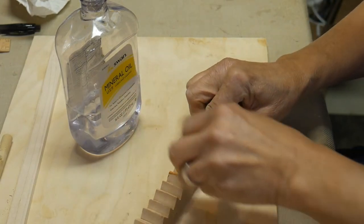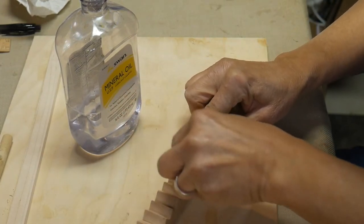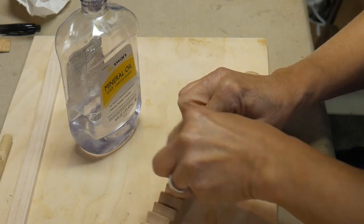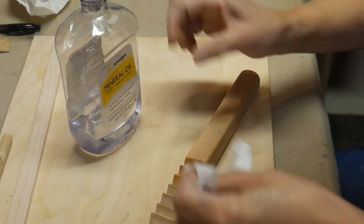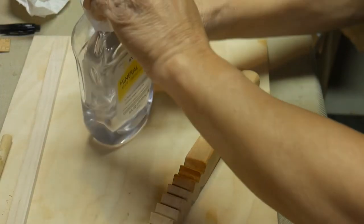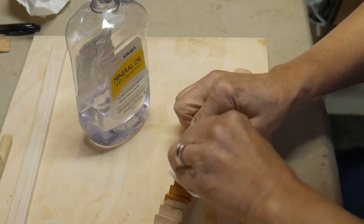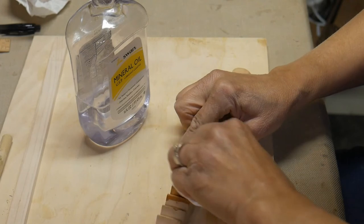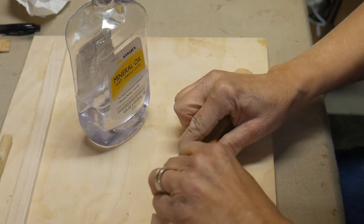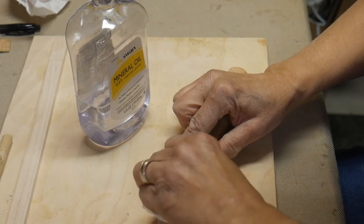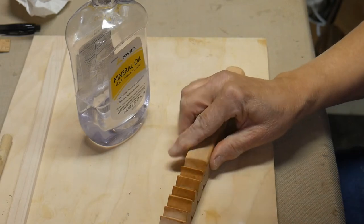If children are not going to play it, you can finish it however you want. But sometimes, depending on what you use, it will also affect the sound of your instrument. So keep that in mind. And this is just a real pretty cherry, so I am just using mineral oil to finish it off.